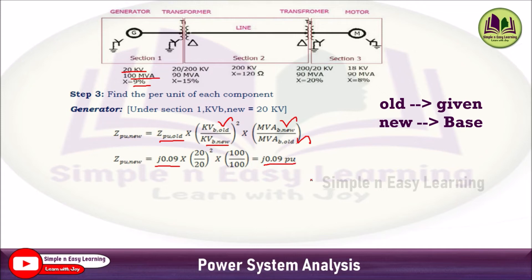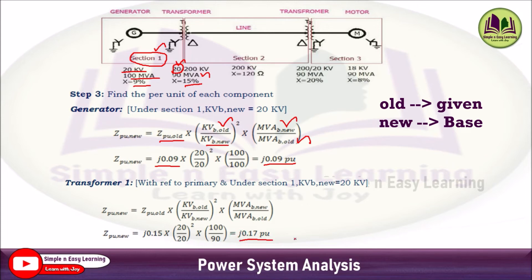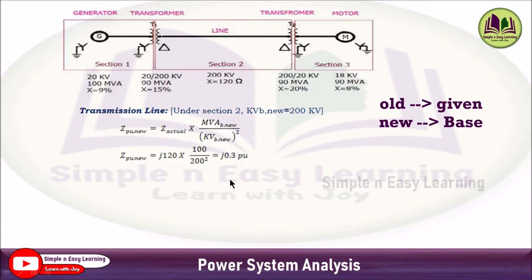For transformer T1, it is connected on the LT side in Section 1, so we use the LT side voltage of 20 kV. Applying the formula: j0.15 × (20/20)² × (100/90). The given value is 15% = j0.15, KV given and base are both 20, base MVA is 100, and given MVA is 90. This gives j0.17 per unit.